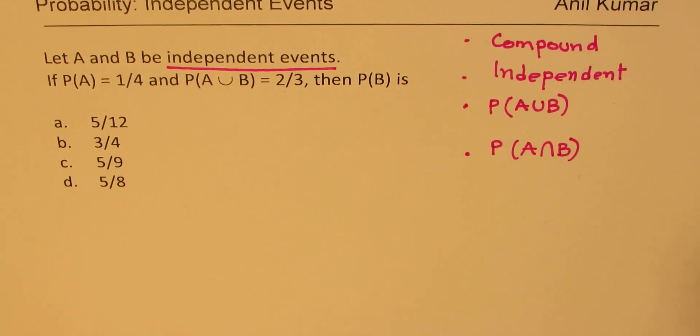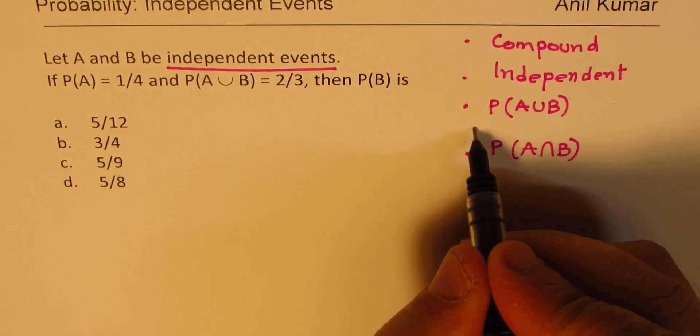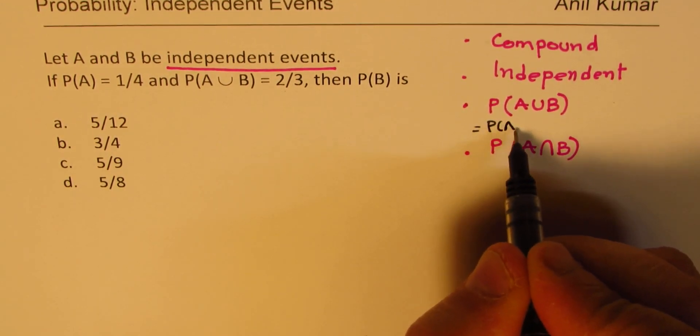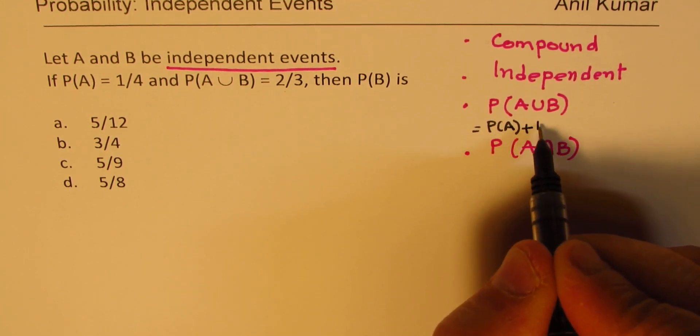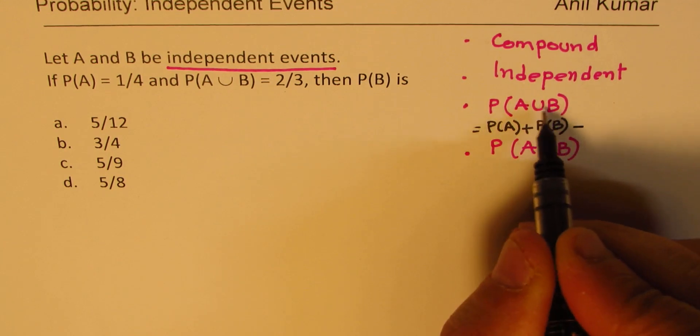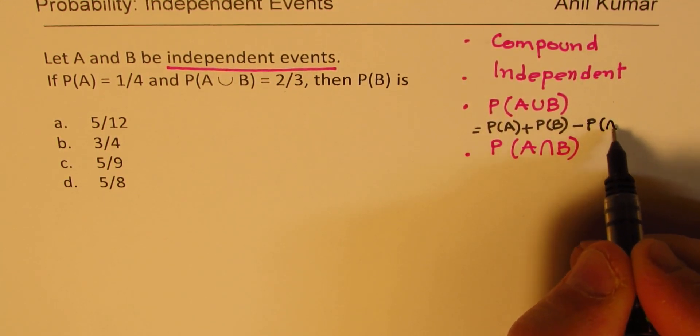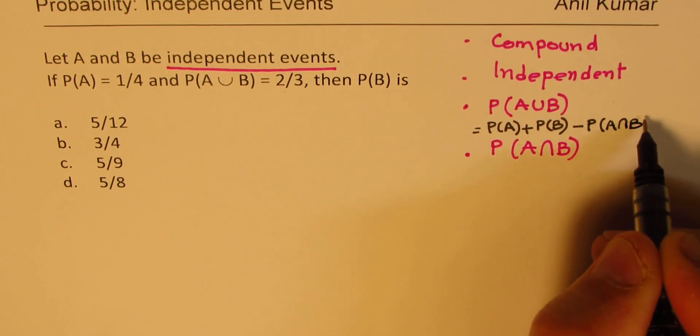When I say union, it means what? It basically means that you are looking for probability of A plus probability of B. And there has to be something in common between these two also. That means you should take away the probability of A intersection B, correct?